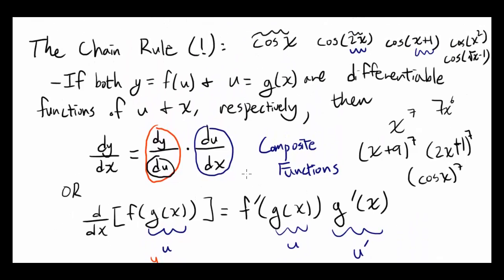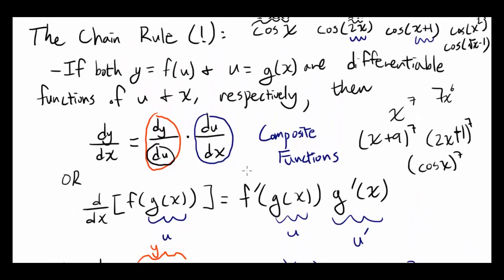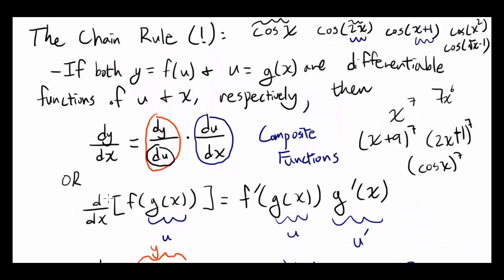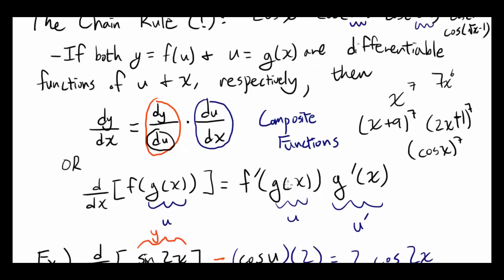Now, the chain rule can also be written as: derivative with respect to x of f of g of x, or f of u, is the same as f prime of g of x times g prime of x.